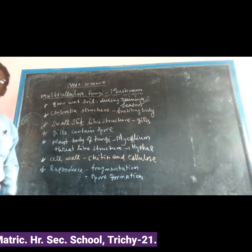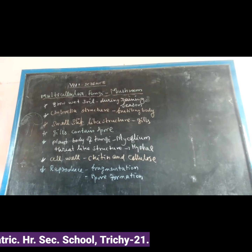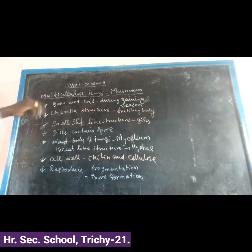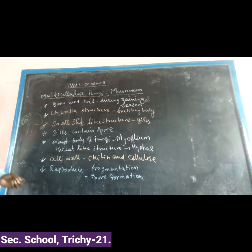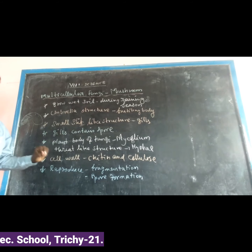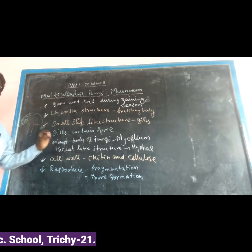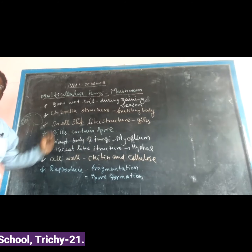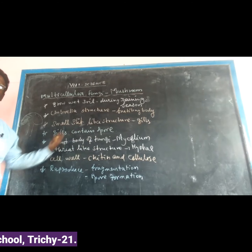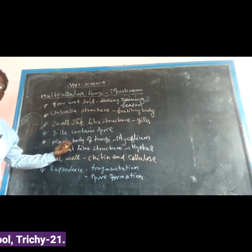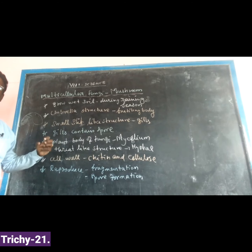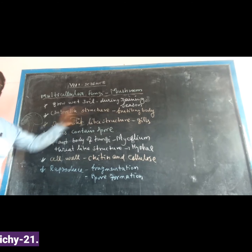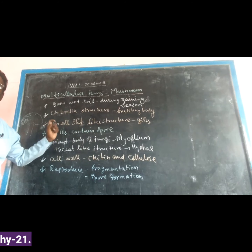Most fungi are parasites — they obtain food material from other living organisms. Some fungi are saprophytic, obtaining food from dead organic matter; for example, Rhizopus. Some fungi are associated with the roots of higher plants, which is called mycorrhiza.